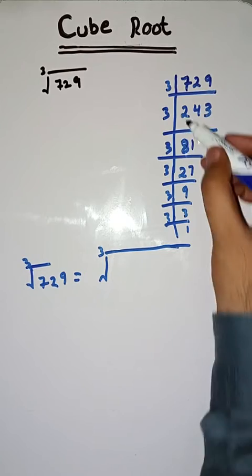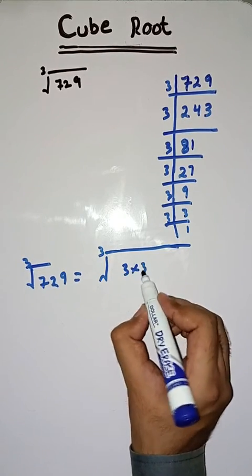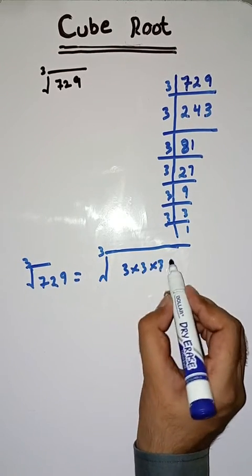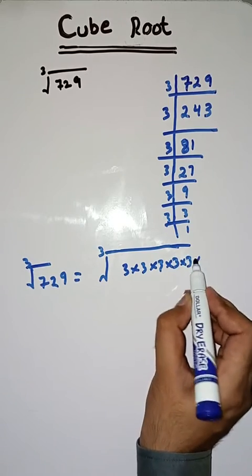The prime factors are 3 × 3 × 3 × 3 × 3 × 3.